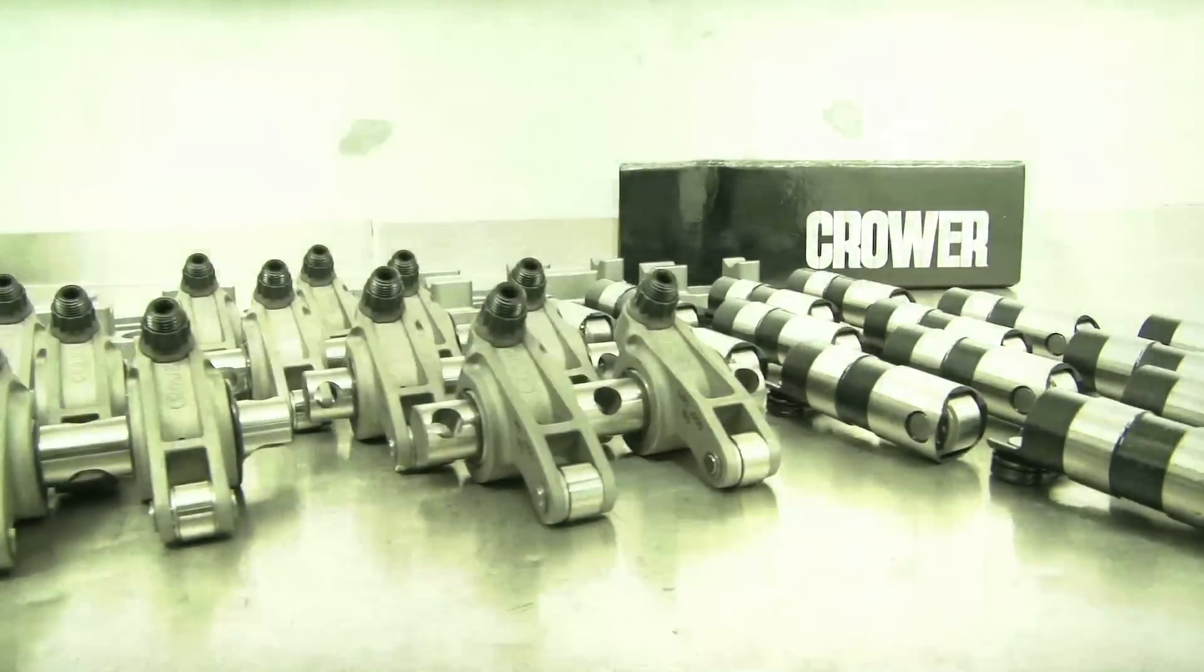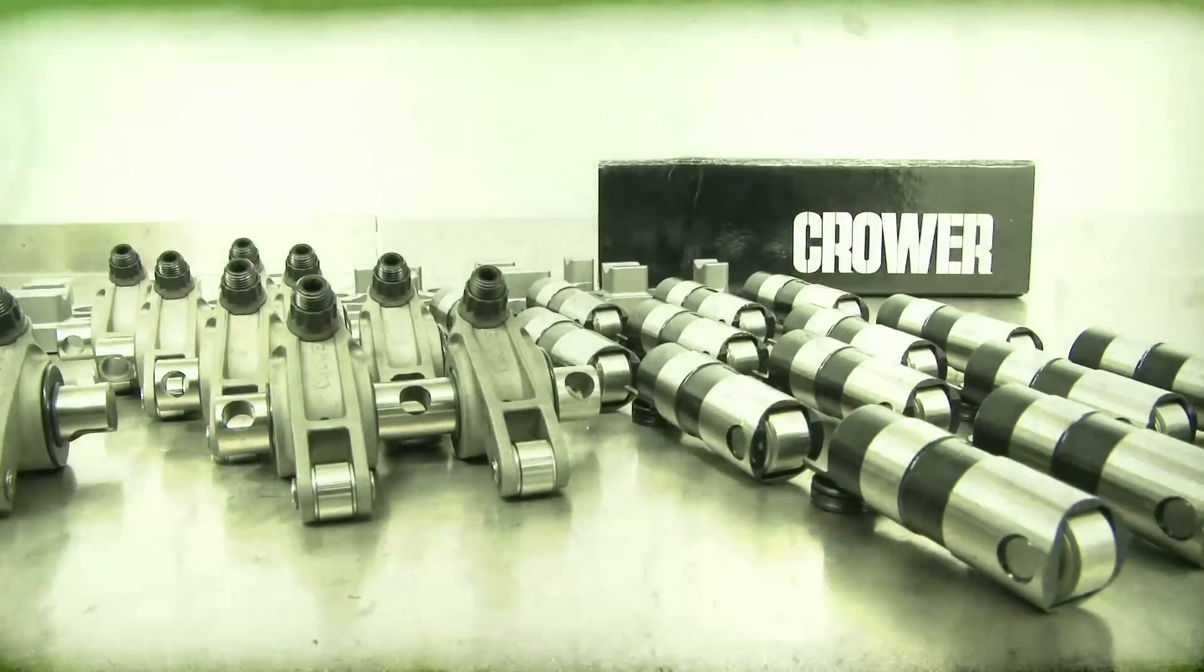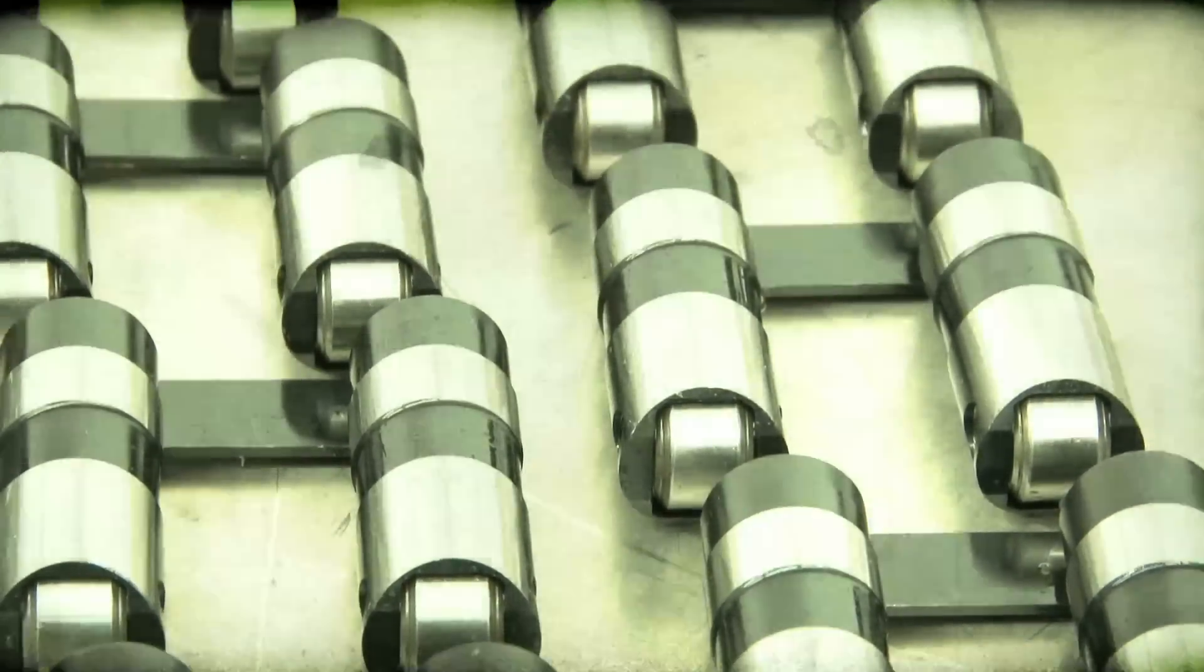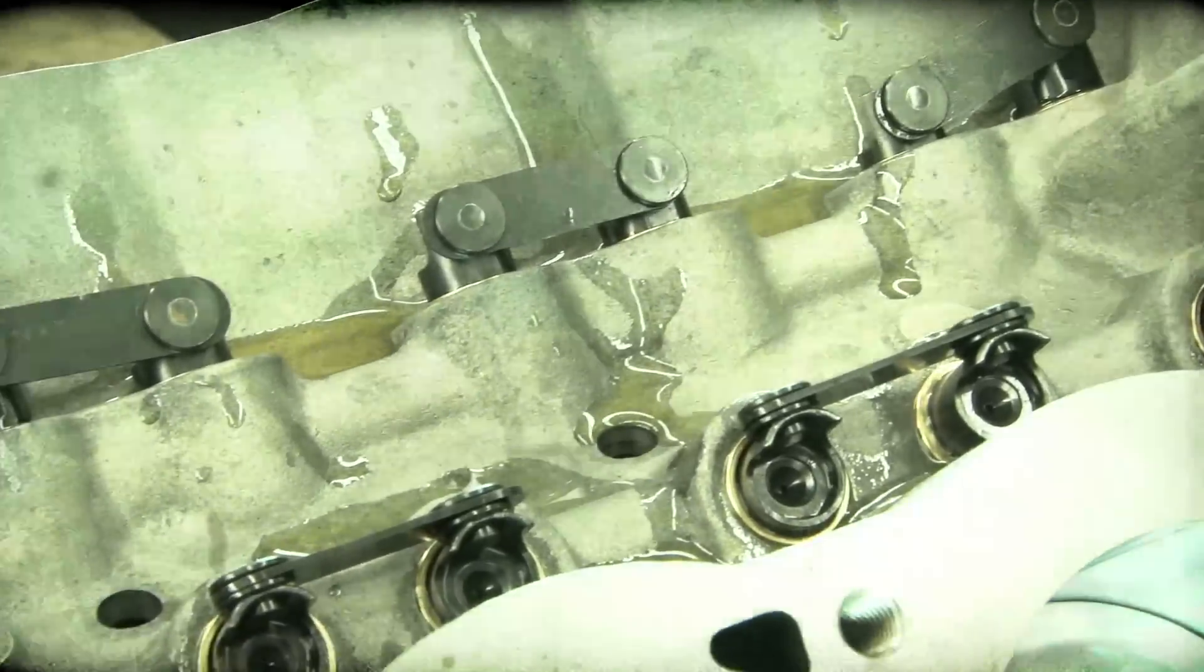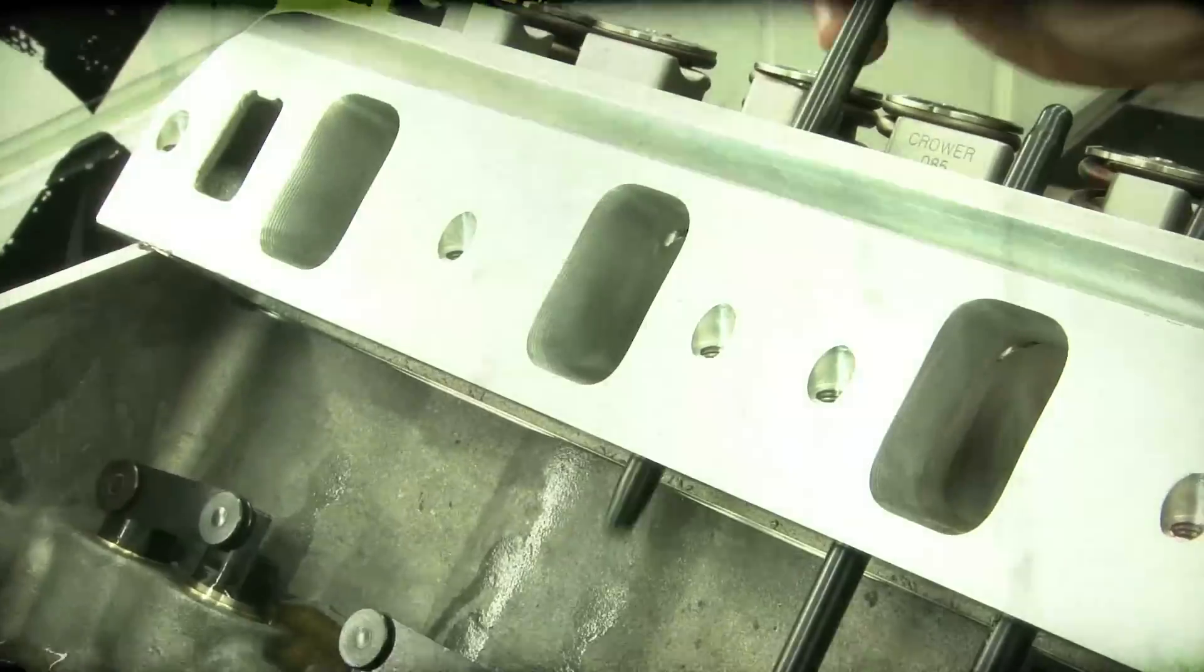Since our 427 is designed to see a lot of street driving, we again turn to Crower for their hydraulic roller tie bar lifters. These lifters feature a redesigned body and bearing for superb longevity. Tying the rocker to the lifter is a Crower one-piece pushrod.